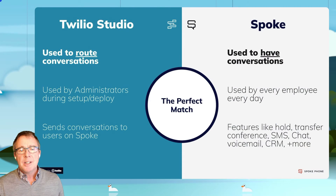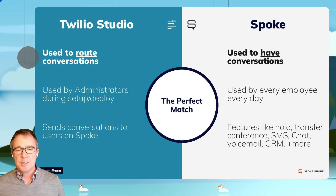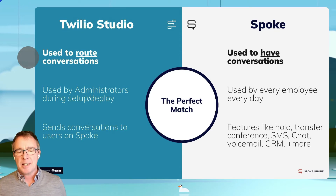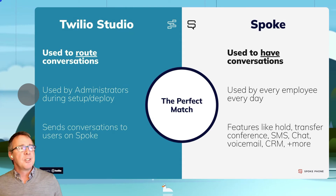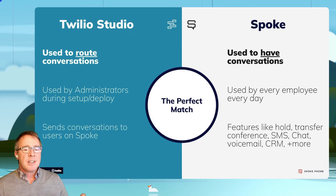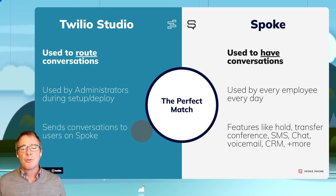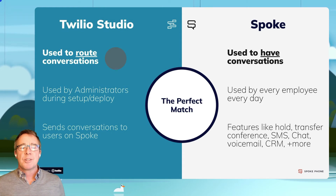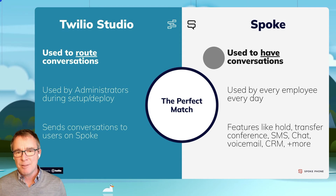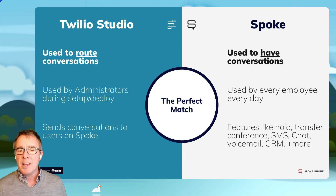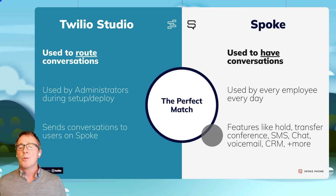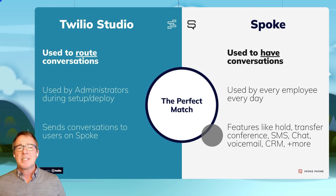Twilio Studio is used to route conversations. You can build really immersive IVRs and great customer experiences to direct customers. It's used by your administrator during the setup of your Twilio account, and you can also use it to route those conversations to users on Spoke. Spoke is used to have conversations — it includes features like calls on hold, transfer, conference, SMS, CRM integrations, voicemail to email, and those kinds of things that users want.